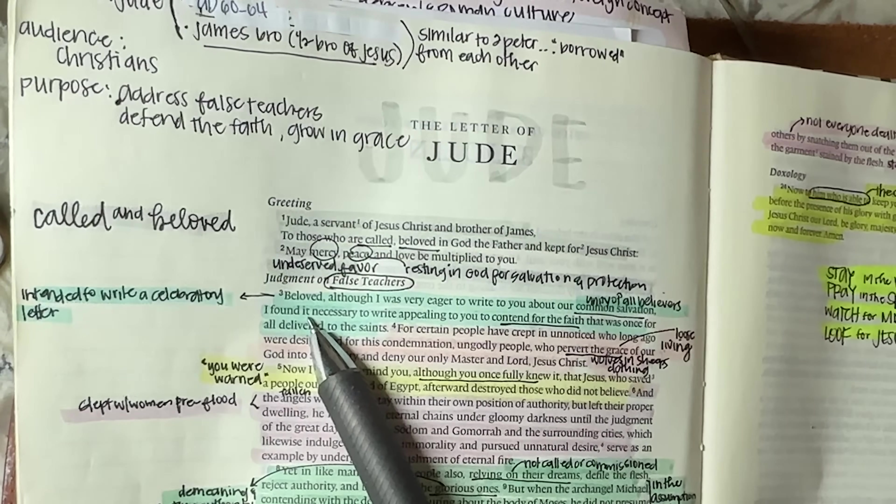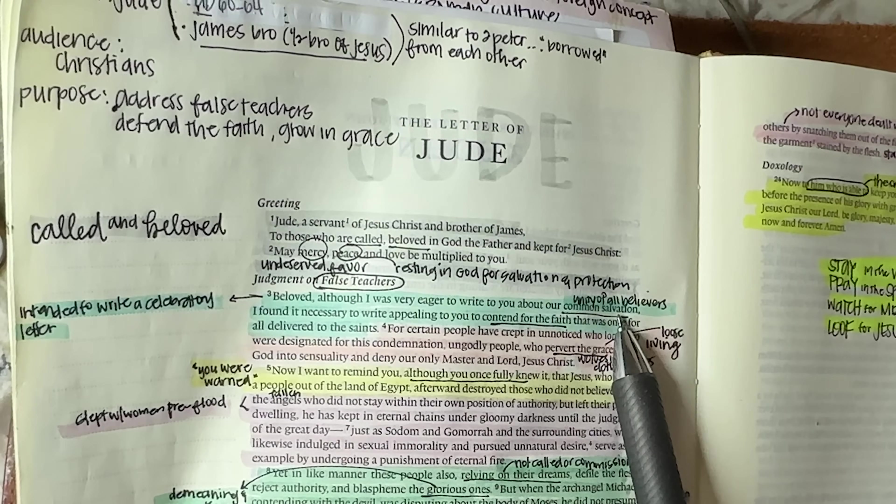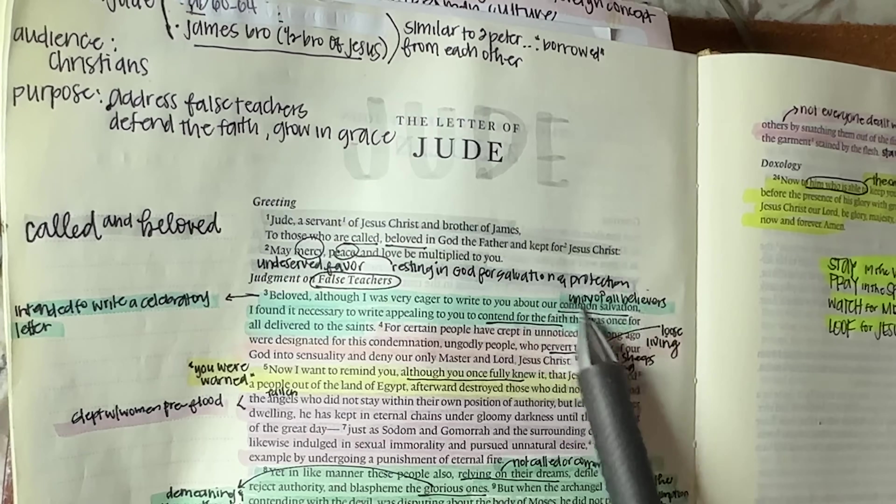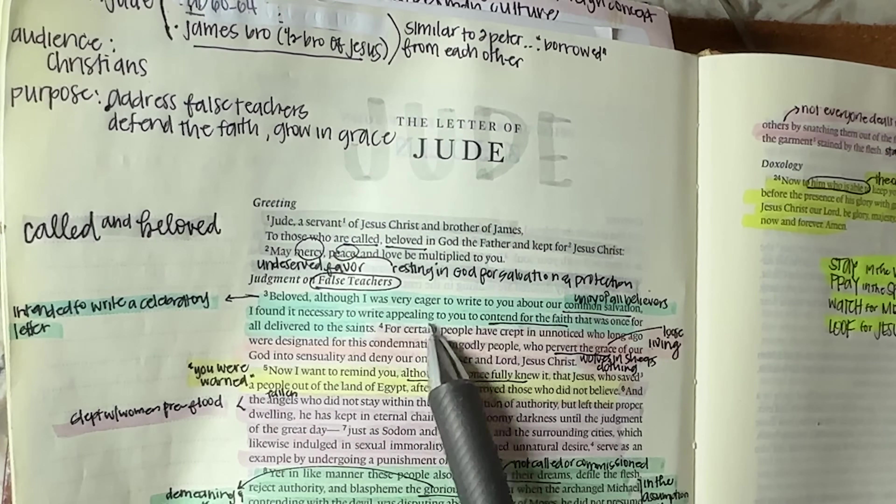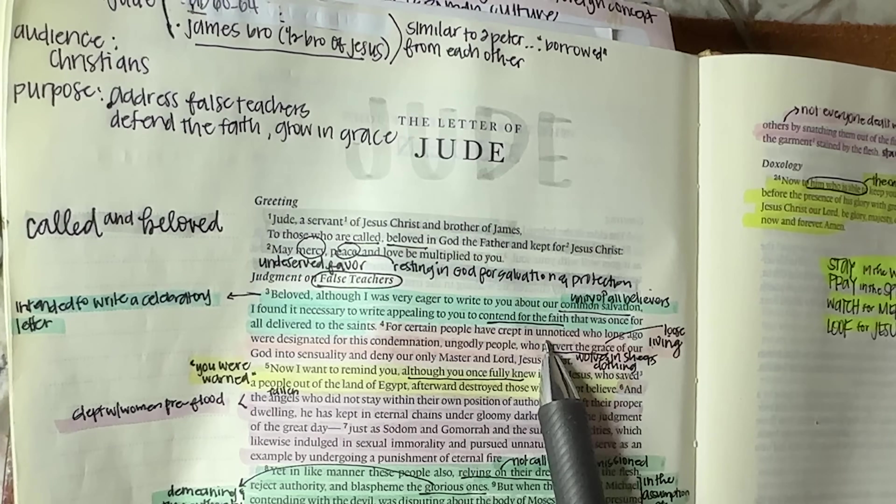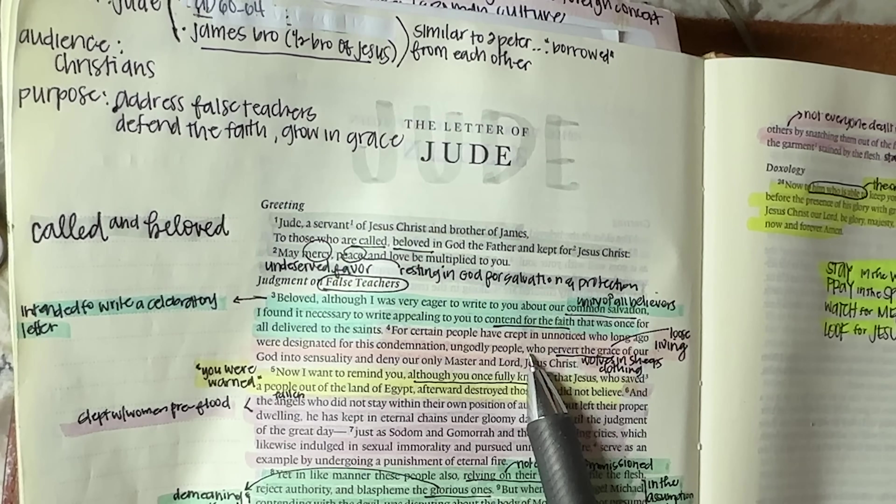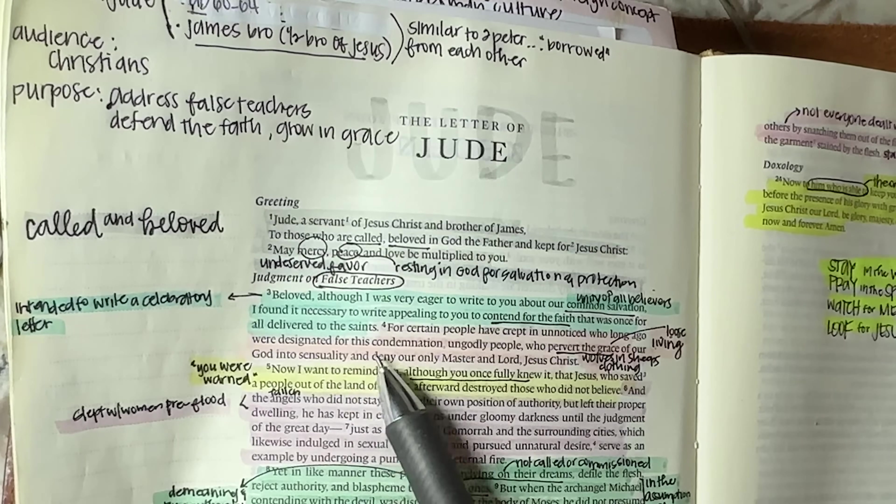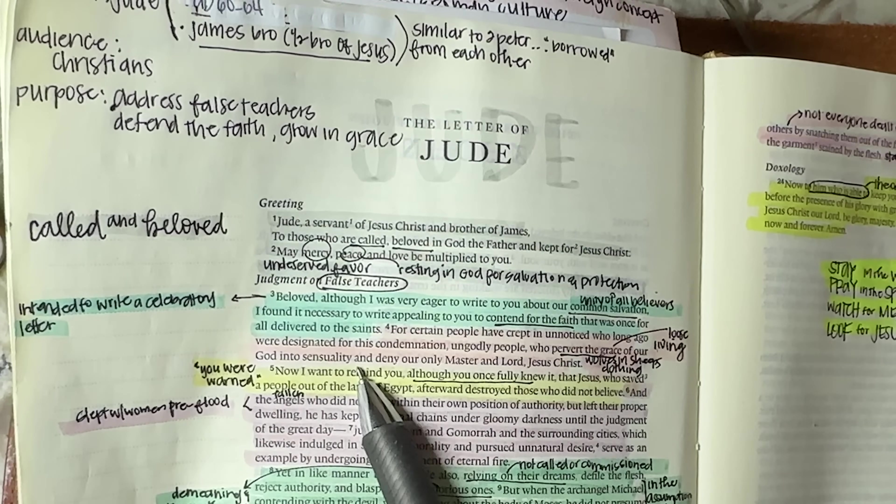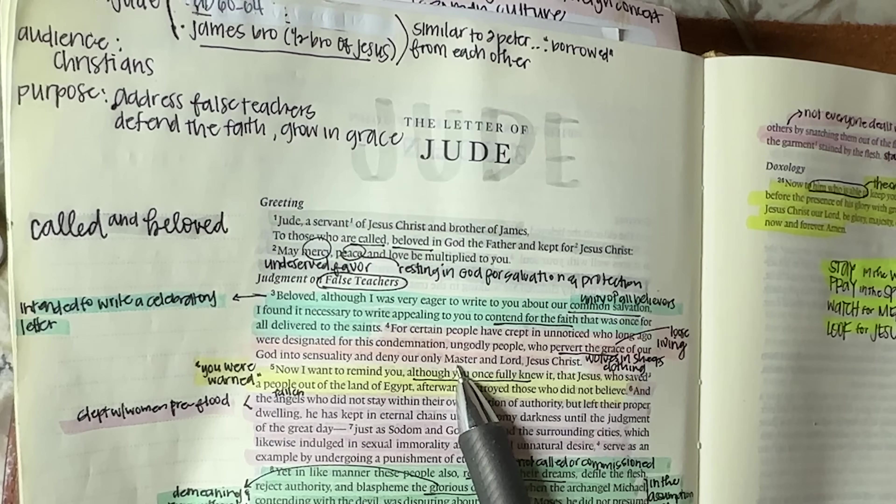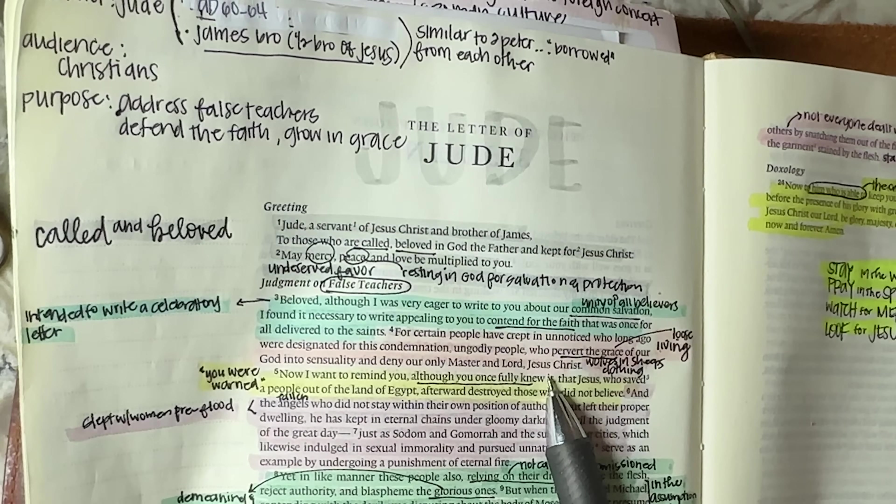So here's his judgment on false teachers. Beloved, although I was very eager to write to you about our common salvation, meaning the unity of all of the church. So he's like, this was supposed to be a celebratory letter. I found it necessary instead to write appealing to you to contend for the faith instead that was once for all delivered to the saints. For certain people have crept in unnoticed who long ago were designated for this condemnation, ungodly people who pervert the grace of our God into sensuality and deny our only master and Lord Jesus Christ. So these are people who are loosely living. They are wolves in sheep, sheep's clothing.